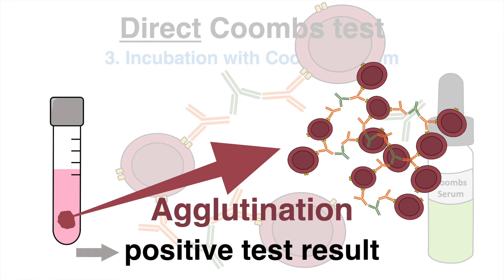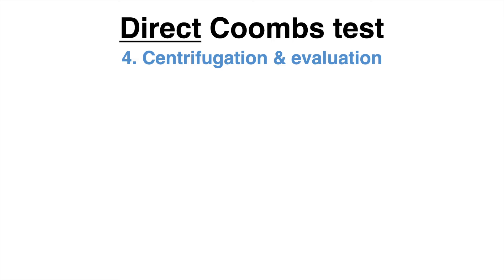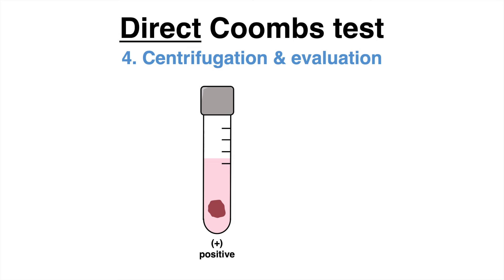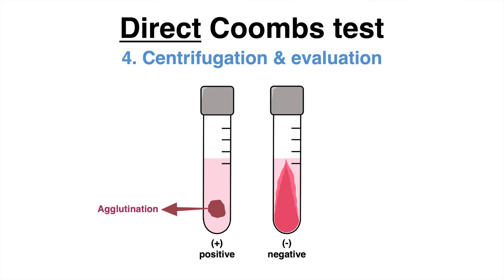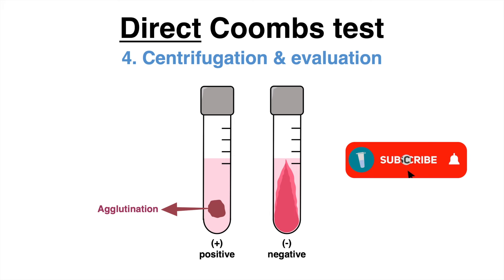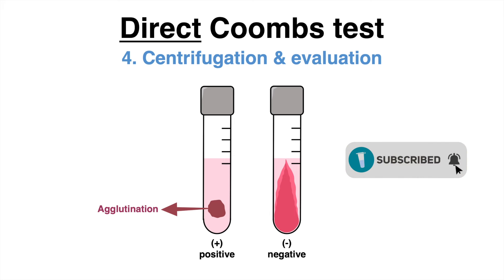There are different ways to evaluate the test result. One way with the conventional test tubes includes a centrifugation step. After centrifugation, in case of a positive result, the agglutination can be visually detected in the form of red blood cell clumps. In case of a negative result, meaning that no antibodies were bound to the surface of red blood cells, the result would look more like this.